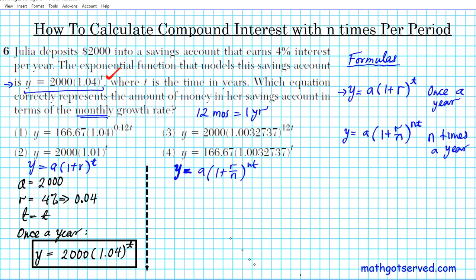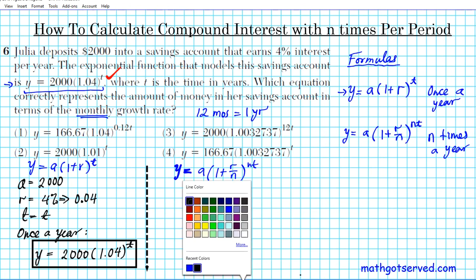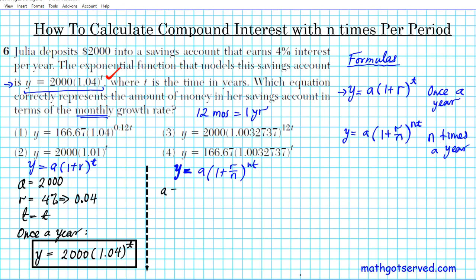In this particular setup right here, let's list the knowns and unknowns. So the starting amount a is still 2000. The rate is still the same, 4%. If you convert it to decimal is 0.04. You move the decimal point two places to the left. Time t is t. And then n in this case, which wasn't present before, is 12 because we have 12 times per the period, 12 months in a year, which is a period.